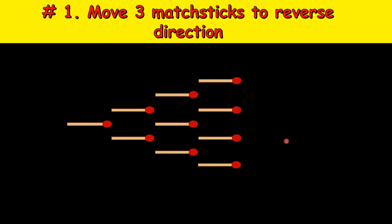And the time is up, so let's see the solution. The first move is to move this matchstick from fourth to second row, and similarly this one from here to here. So two moves are exhausted, one is left. Move this one from first row to last row, and now the direction is four, three, two, one instead of one, two, three, four.